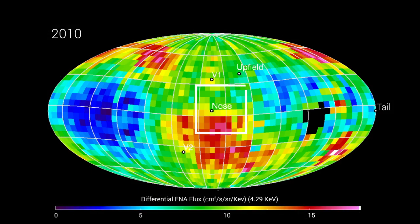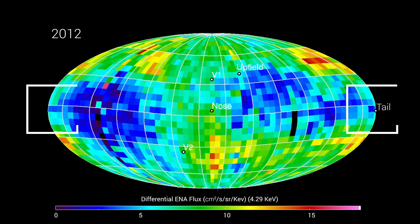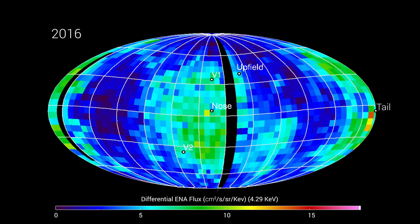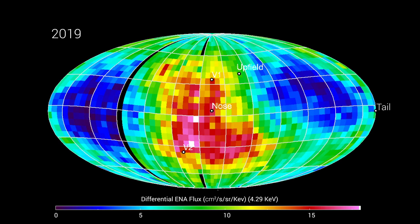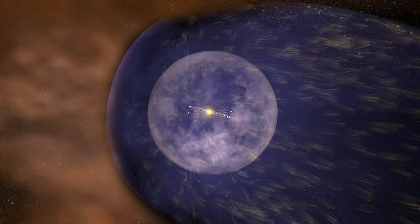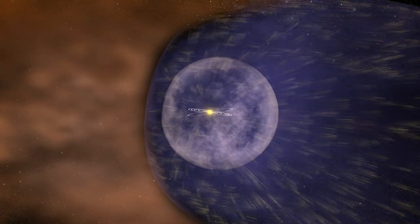This is the nose, and this is the tail. The nose shows high ENA fluxes, which indicate a strong gust of wind and the heliosphere ballooning. From tracking this expansion, scientists found that the nose and tail were not symmetrical.